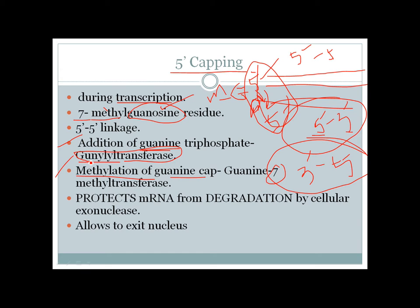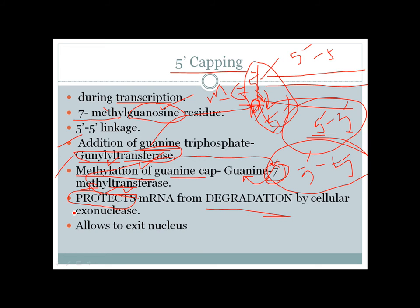The addition of guanine to the five prime end is mediated by guanine transferase, the enzyme which transfers guanine to the five prime end. Methylation of the guanine cap at the seventh position is done by an enzyme called guanine-7-methyltransferase. The main job of five prime capping is to protect the mRNA from degradation by cellular exonucleases.